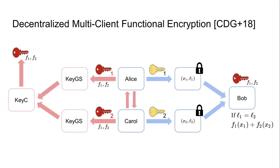A notion that operates without a trusted party is decentralized multi-client functional encryption, introduced by Chotard et al. In a decentralized scheme, Alice and Carol interact with each other to generate their own encryption and secret keys. They can use their secret keys to generate functional key shares that can be combined to obtain the full functional key, which Bob can then use in the usual manner. The computations of the trusted party are completely transferred to Alice and Carol. In this talk, we also show how our multi-client functional encryption scheme can be decentralized.